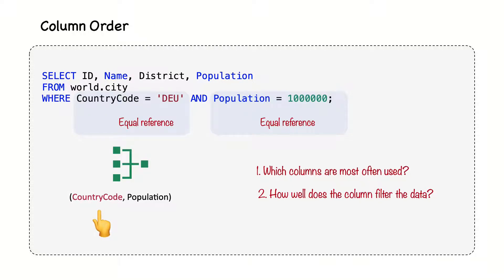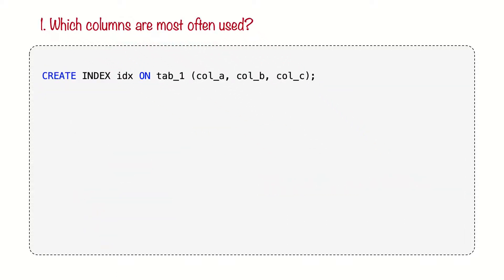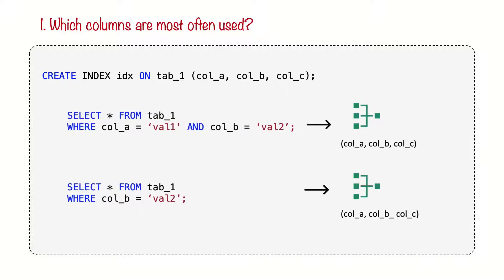For example, if we have an index on column A, B and C, then we can only use the index to filter on column B if we also filter on column A, then that must be an equality condition. We can't use the index to filter on column B directly. So, we need to choose the order carefully.